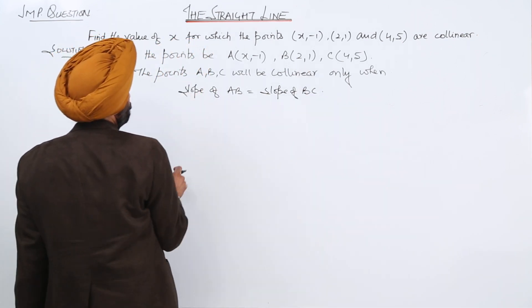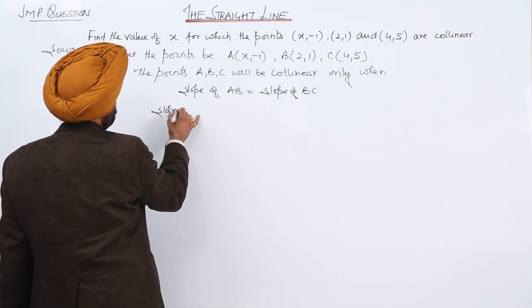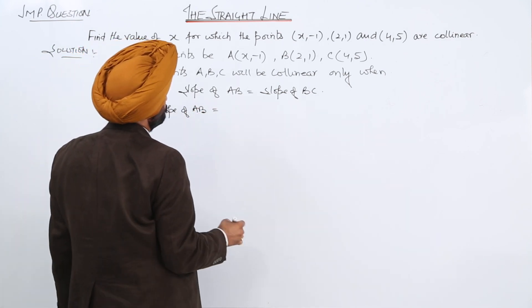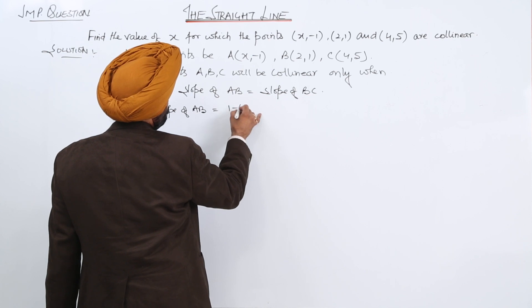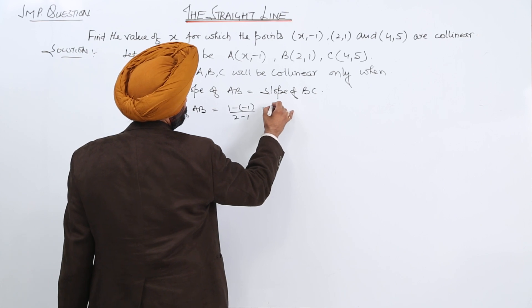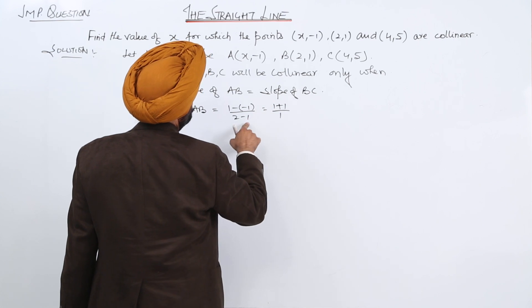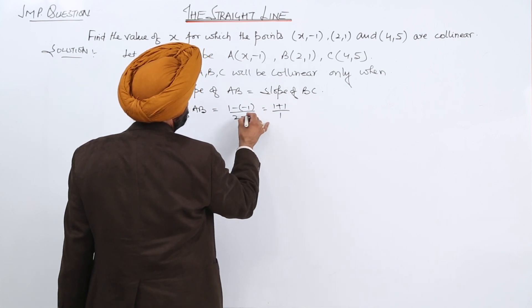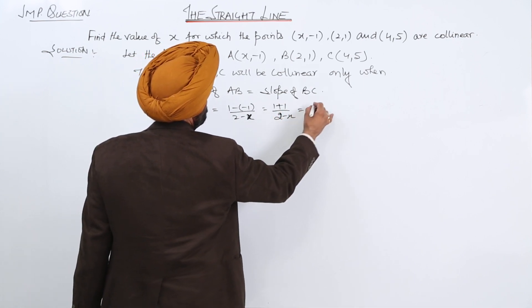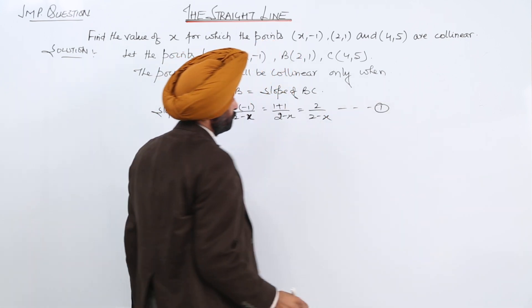Now, slope of AB is equal to 1 plus 1 upon 2 minus x. This is equal to 2 upon 2 minus x.